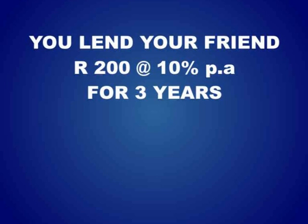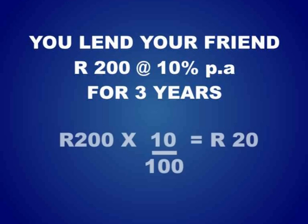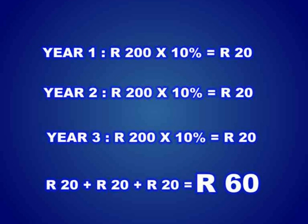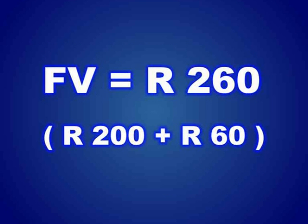Let me use an example to illustrate that. You are going to lend your friend 200 Rand and they are going to pay you back at the end of 3 years. You charge them 10% Simple Interest. 10% of 200 Rand is 20 Rand, which means that per year of them using your money, they are going to pay you 20 Rand. At the end of 3 years, they are going to pay you 60 Rand for the use of your money, as well as the 200 Rand that you lent them, giving a future value of 260 Rand.